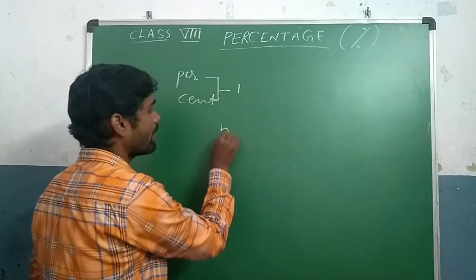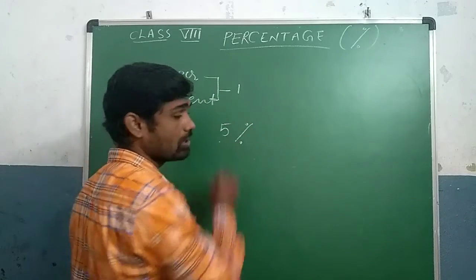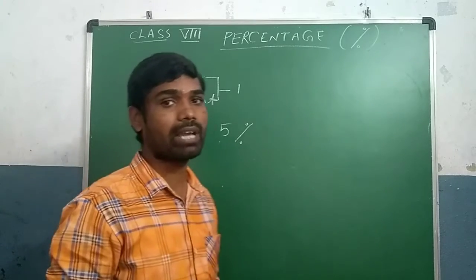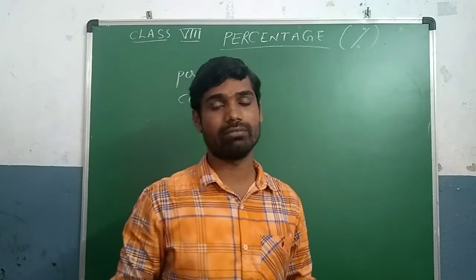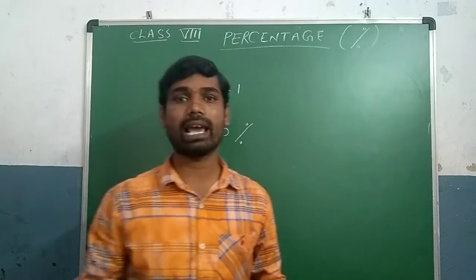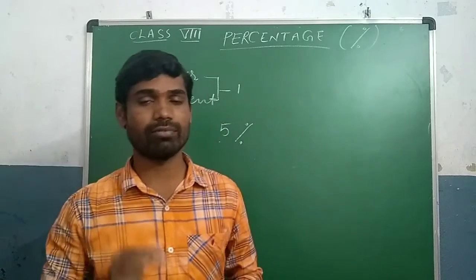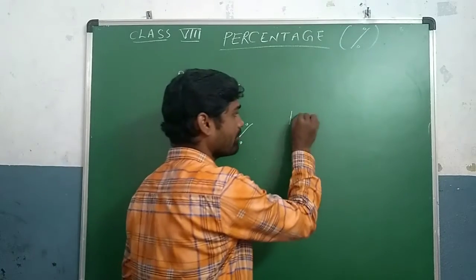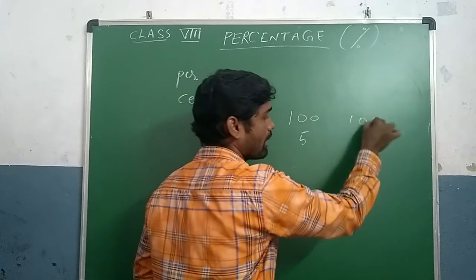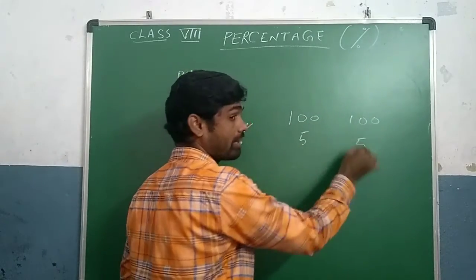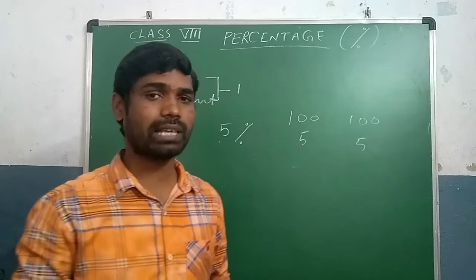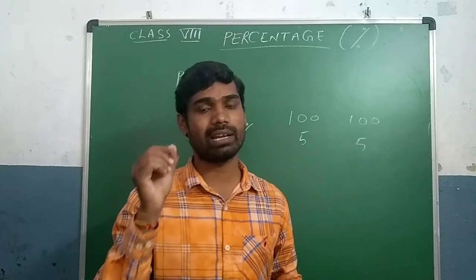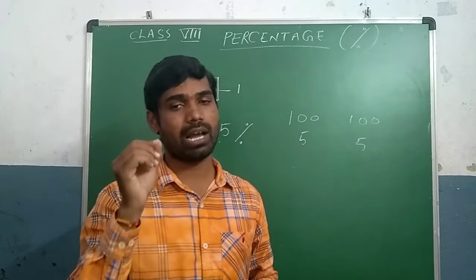For example, five percent — what does five percent mean? Per every hundred, we calculate as five. For every hundred, we will calculate as five. For example, two hundred: for every hundred it is five, so for two hundred it is five plus five. Total: ten. Whatever the value, we will calculate that for every hundred.